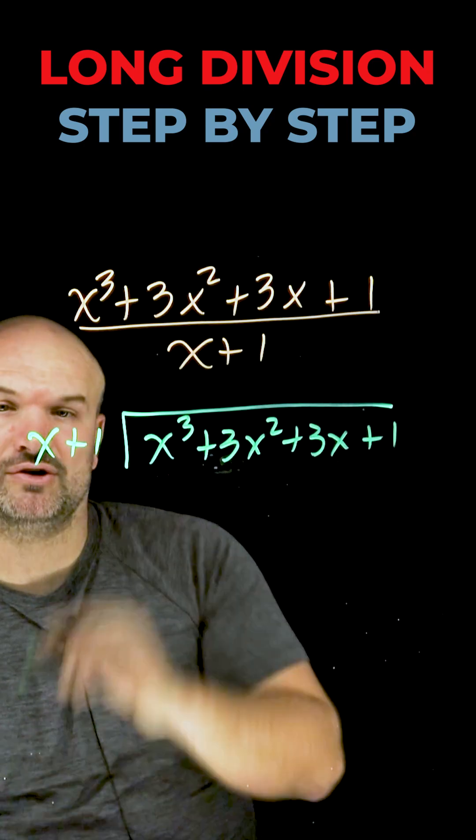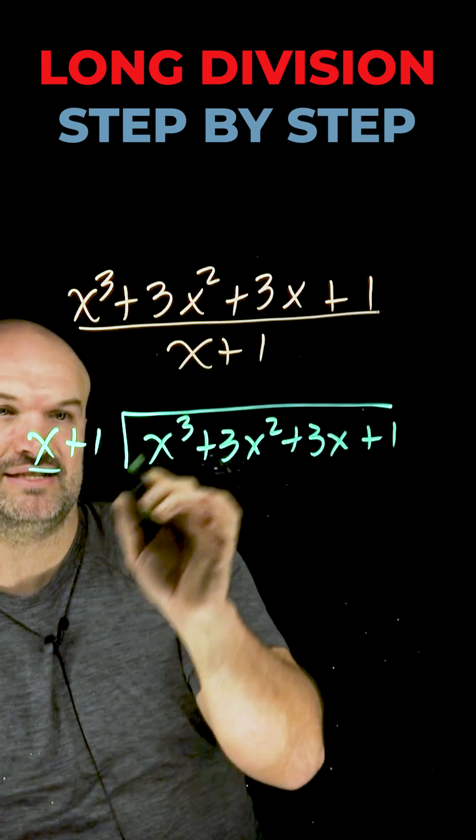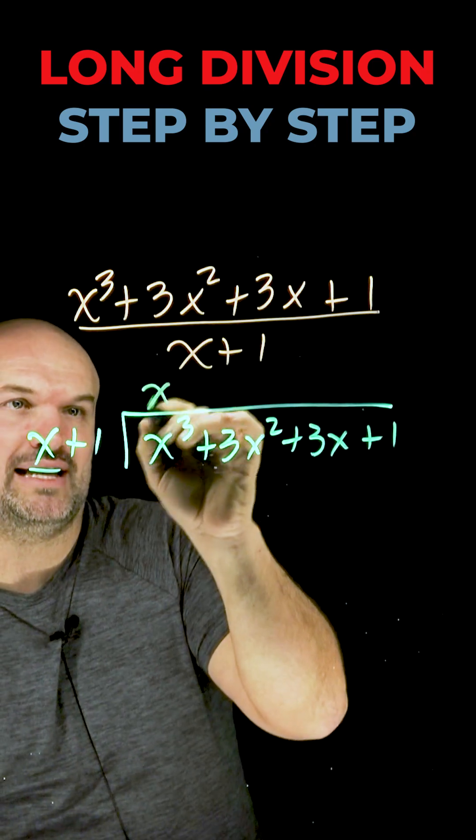To apply the long division algorithm, we're going to take the first term in our divisor and divide it into the first term of our dividend. x cubed divided by x is going to be x squared.